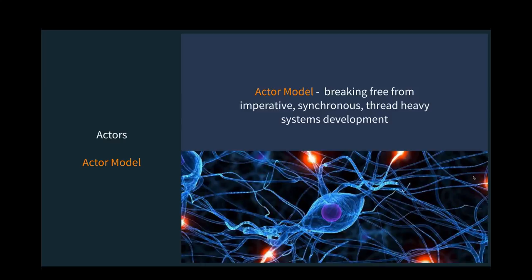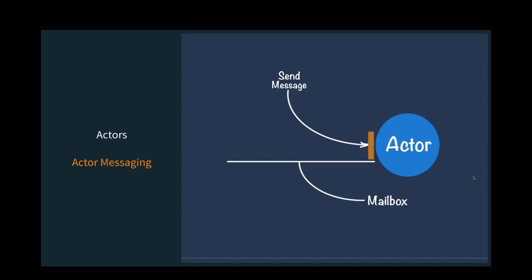The big difference between an actor and what we're normally used to is that the methods on an actor are not directly accessible from your code. You don't invoke methods on an actor directly — the only way to talk to an actor is to send it a message. That message is sent through the actor system that ACA provides. Messages are sent asynchronously and deposited into a mailbox — a queue of pending messages — and the actor works through them one at a time.